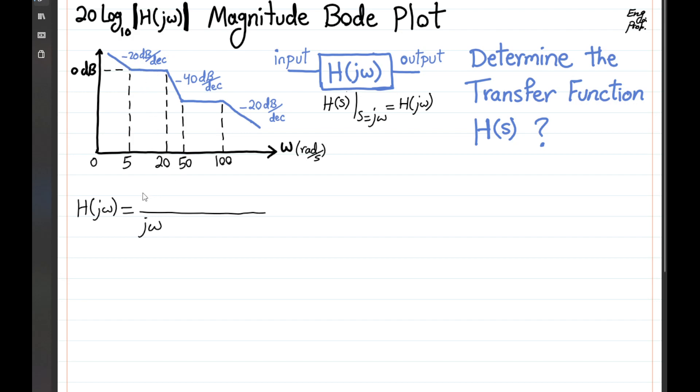that counteracts the slope. So we end up with having 1 plus j omega divided by 5 radian per second. And then after that point, it would be a 0 slope up to 20. And then by 20, we get 2 poles actually,